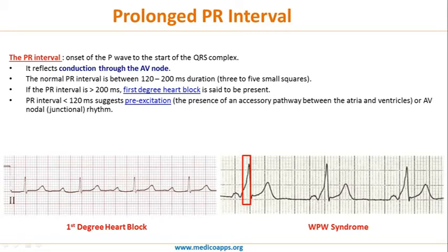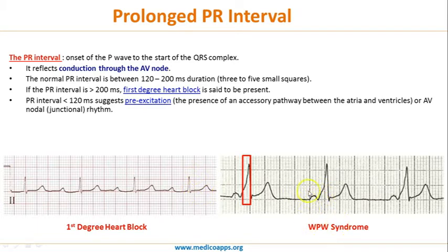Looking at this case, immediately after the P wave the QRS complex is starting — the PR interval is very reduced. More characteristically, there is a slurred uptake of the QRS complex. Normally the QRS complex is very straight and tall, but here there is a slurring. This is also called a delta wave, and this is diagnostic of Wolf-Parkinson-White syndrome, or WPW syndrome.